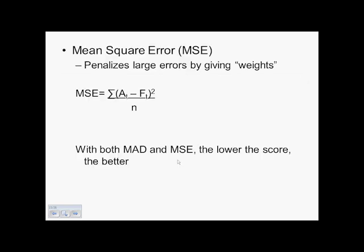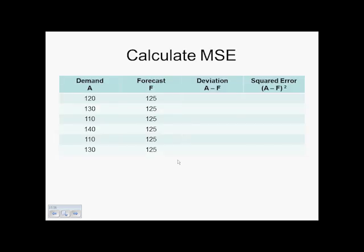And we are now going to move on to mean squared error. Mean squared error literally weights or penalizes large errors in forecasting. And it is found by summing up the actual minus the forecasted for each time period, and squaring that, and dividing by n. And that right there is slide 16 in chapter 4.